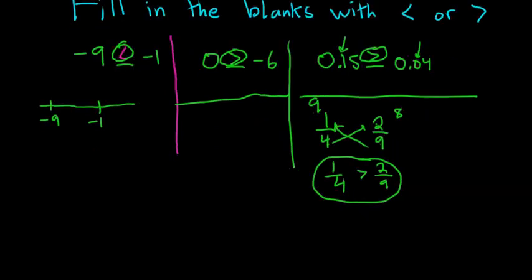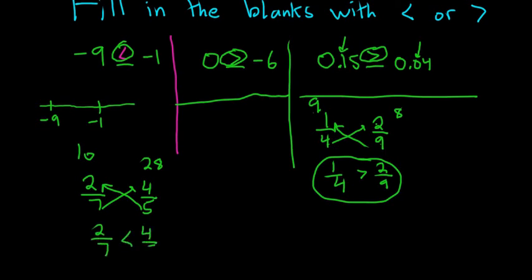Let's do another one, 2 sevenths, 4 fifths. Again, if it's not clear which one is bigger, you just multiply. 5 times 2 is 10, 7 times 4 is 28. 28 is bigger than 4 fifths. That means that 2 sevenths is less than 4 fifths.